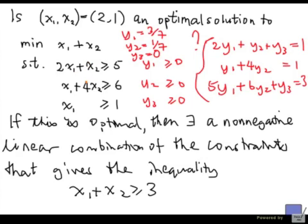3 over 7 plus 4 over 7 is also 1. Now on the right-hand side, we have 15 over 7 plus 6 over 7. That's 21 over 7, which is 3.